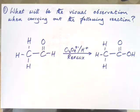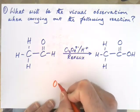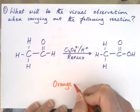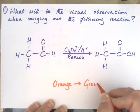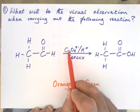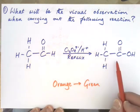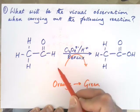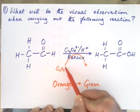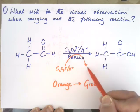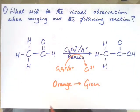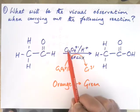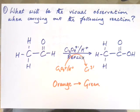What we would see here is an orange to green colour change. I've been a little bit sneaky here because I've only shown you the starting material of potassium dichromate. Because ethanol to ethanoic acid is an oxidation, the potassium dichromate would itself get reduced — from Cr₂O₇²⁻ with H⁺ to Cr³⁺. That's the orange to green colour change. Ethanol and ethanoic acid are both colourless, so the only colour change we'd see is the reduction of potassium dichromate to chromium-3.